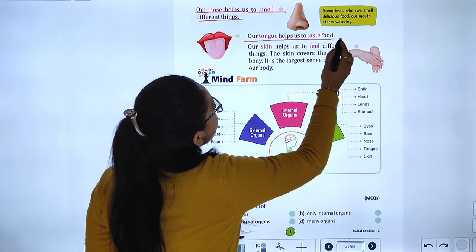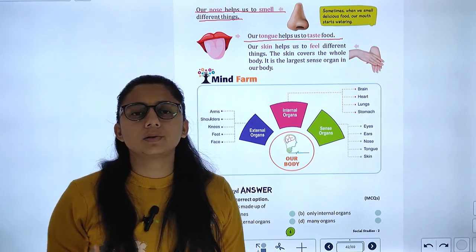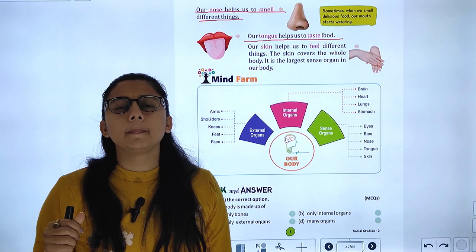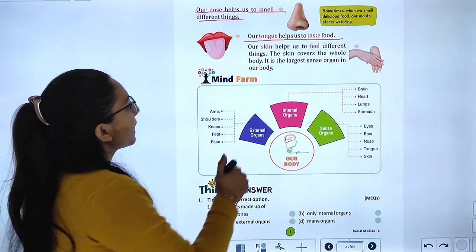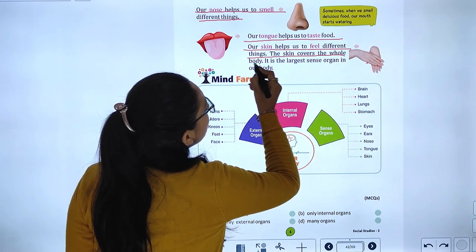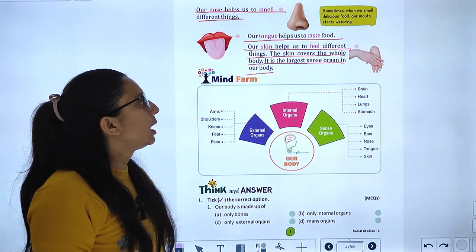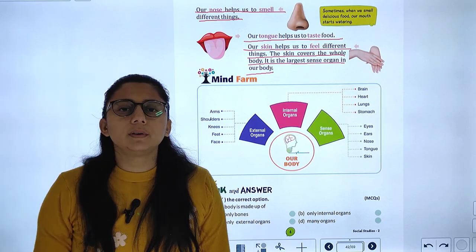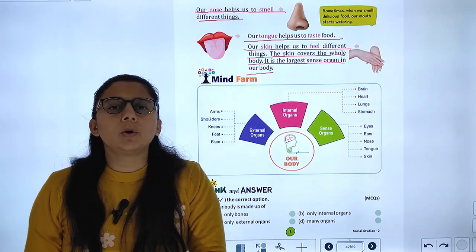Our tongue helps us to taste food. It tells us how the food is — whether it is bitter, salty, sweet, or sour. Our skin helps us to feel different things. The skin covers the whole body and is the largest sense organ in our body.